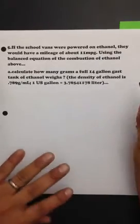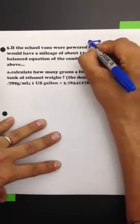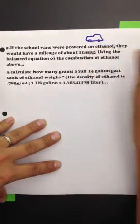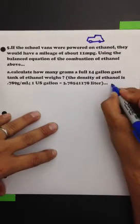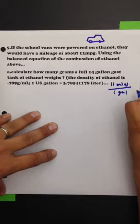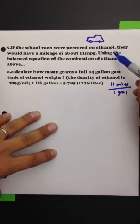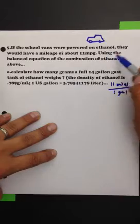All right, okay. If the school vans were powered on ethanol, they would have a mileage of about 11 miles per gallon. I'm going to write that down. 11 miles per one gallon, which is actually ethanol based vehicles that have slightly less, slightly lower fuel efficiency.